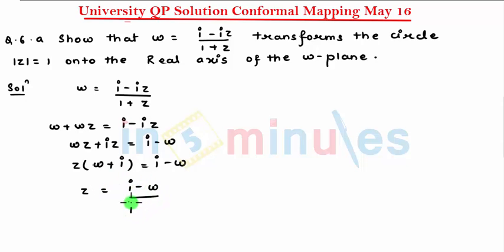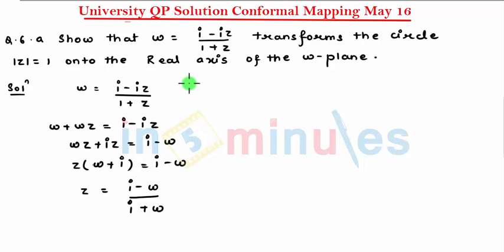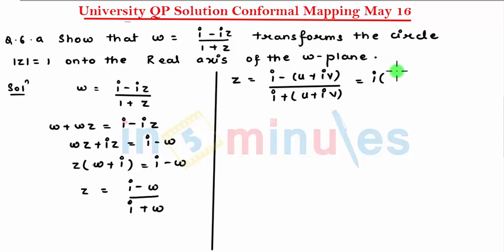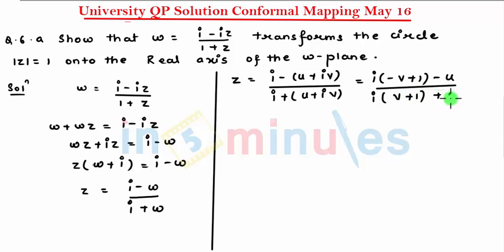Therefore we can write z = (i - w) / (i + w). It is given that |z| = 1 — we need to transform this circle onto the real axis of the w-plane. The real axis means v = 0. Substituting w = u + iv, we get z = (i - (u + iv)) / (i + (u + iv)). Taking i common from numerator and denominator, the numerator becomes i(1 - v - u) and the denominator becomes i(1 + v + u).